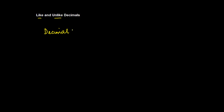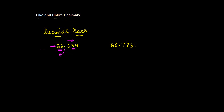So what does like and unlike decimal mean? I hope you understand the concept of decimal places. In any given number there are two parts. Let's say I take 33.634 and 66.7831. In both these numbers you have two parts: one is the part before the decimal point and the other is the part after the decimal point. The first is known as the whole part and the second is the decimal part.